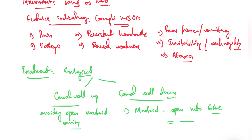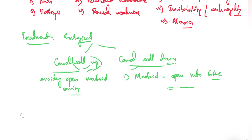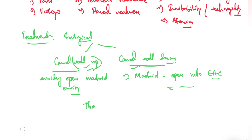In the canal wall up procedure, the meatus appears normal because the mastoid cavity is not left open. Routine cleaning is not required. However, there is a high rate of recurrent or residual cholesteatoma, so a second-look surgery is required. There are no swimming restrictions for the patient, and hearing aid fitting is easier. Reconstructive surgery combined with conservative treatment may also be done.